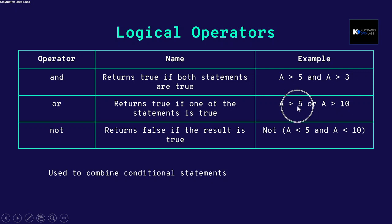For OR, if a is 5, then 'a greater than 5' is false because a equals 5, and 'a greater than 10' is also false, so both are false and the output is false. But if a is 6, then '6 greater than 5' is true, and even though '6 greater than 10' is false, one is true, so OR returns true.